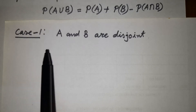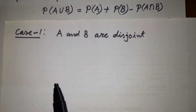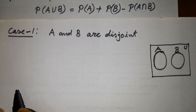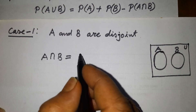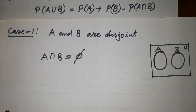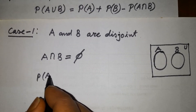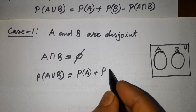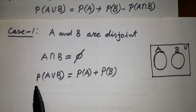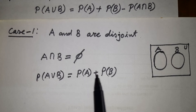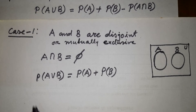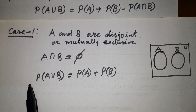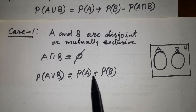Here we have two cases. Case 1: if A and B are disjoint. The Venn diagram of these two sets are shown here. Here A intersection B is a null set. So probability of A union B is equal to probability of A plus probability of B. Thus, if A and B are disjoint or mutually exclusive, then probability of A union B is equal to probability of A plus probability of B.